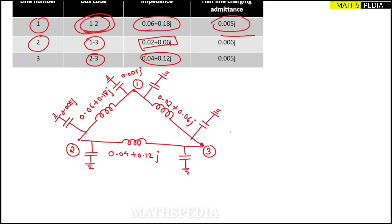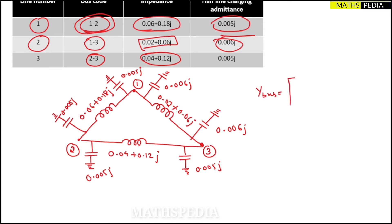For line one–three we have j0.06 and j0.006, and for line two–three we have j0.005 at each end. Our network diagram is now complete. The Y-bus matrix is n×n where n is the number of nodes or buses — here three — so it is a 3×3 matrix.